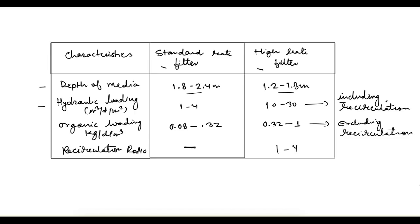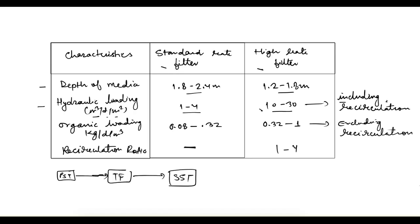Next is hydraulic loading, given in cubic meters per day per square meter. It is between 1 to 4 for standard rate filters and 10 to 30 for high rate filters. This hydraulic loading includes sewage flow through recirculation — that is, if this is your trickling filter with a secondary sedimentation tank after it and primary sedimentation tank before it, some flow comes back. The hydraulic loading includes both QS (raw sewage flow) as well as QR (recirculated flow).